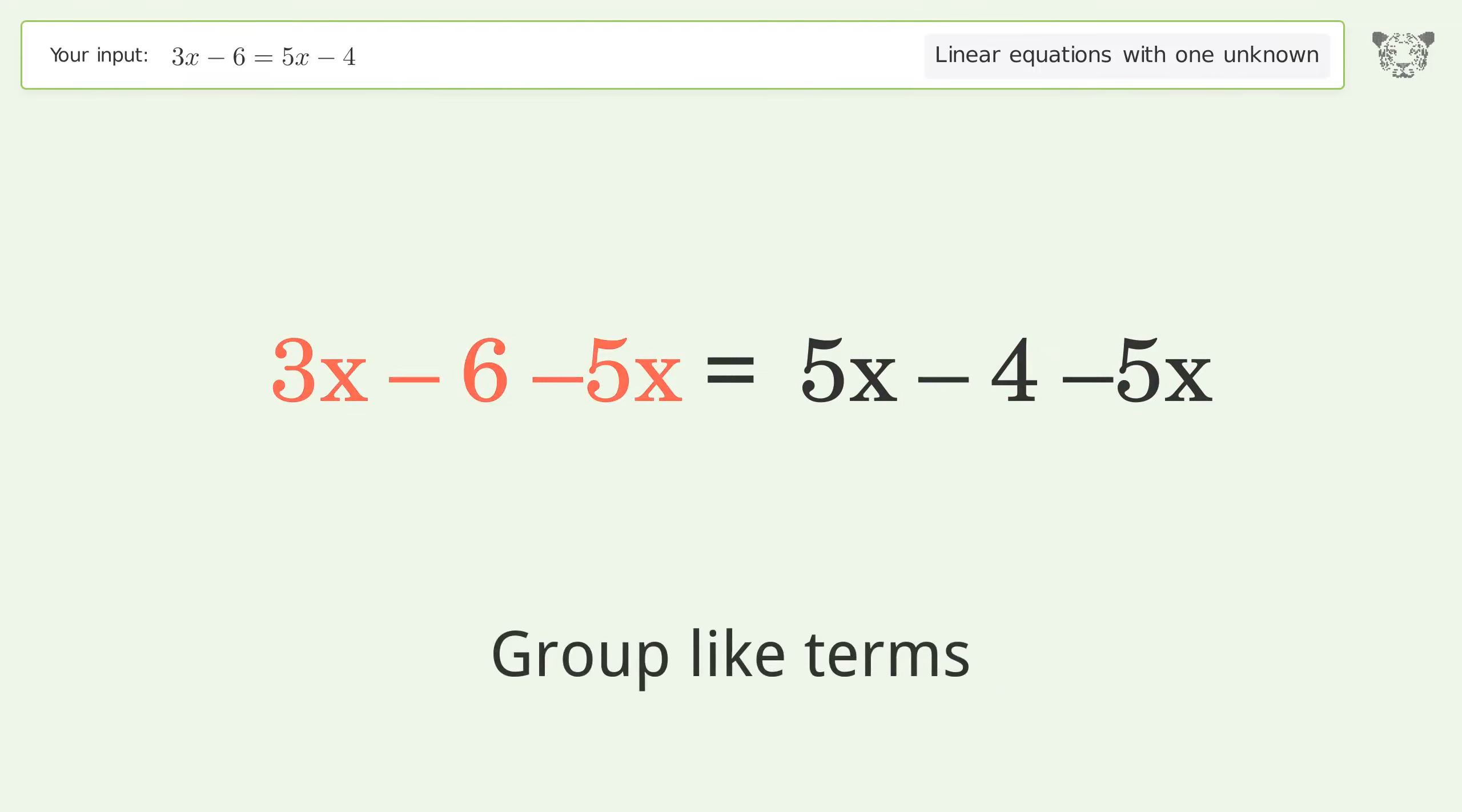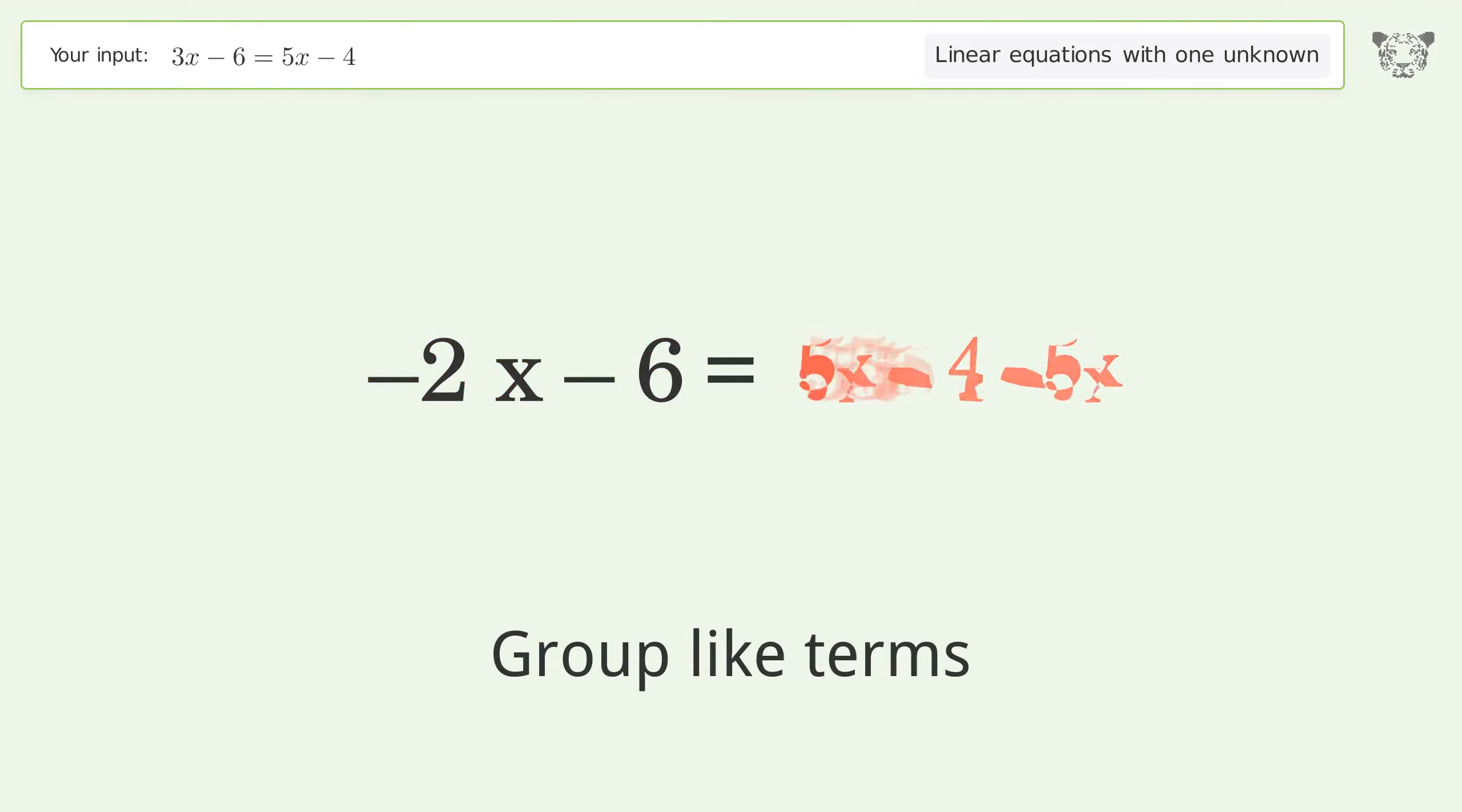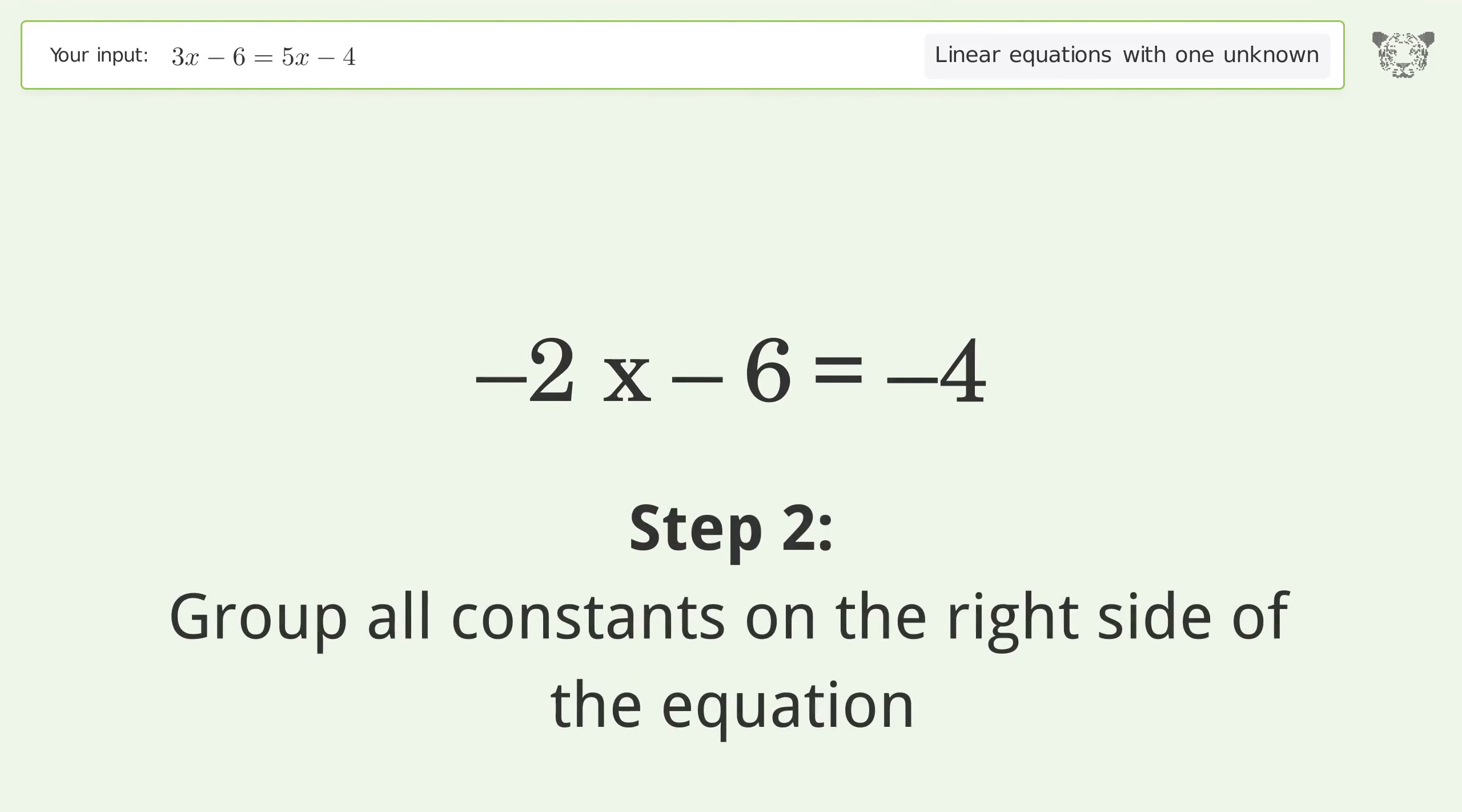Subtract 5x from both sides. Group like terms and simplify the arithmetic. Group like terms and simplify the arithmetic.